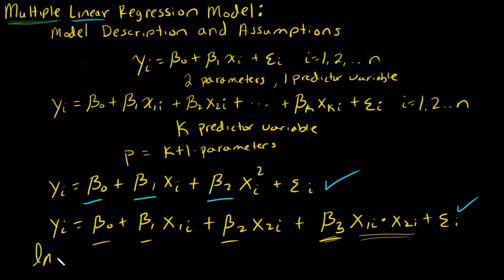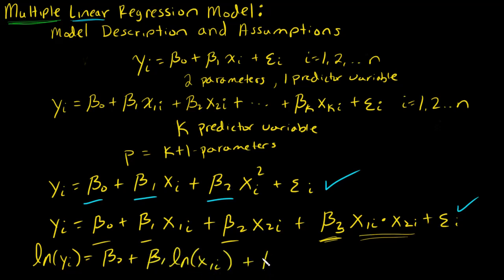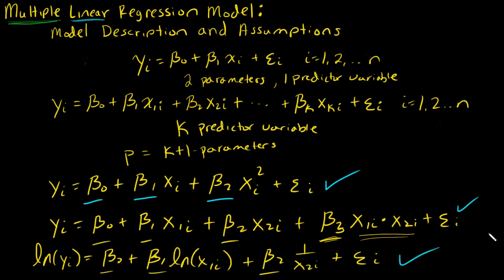You might also see transformations such as ln(y_i) equals beta naught plus beta_1 times ln(x1_i) plus beta_2 times 1 over x2_i. There are lots of transformations on the variables, but nothing is happening to beta — so I'm still linear in beta, and this is still a multiple linear regression model.